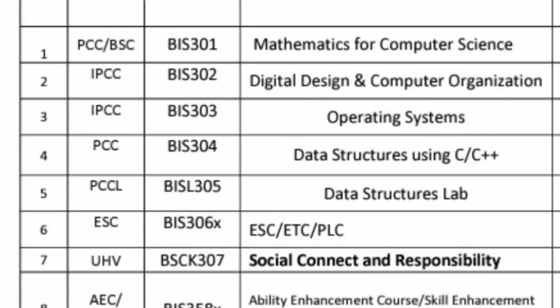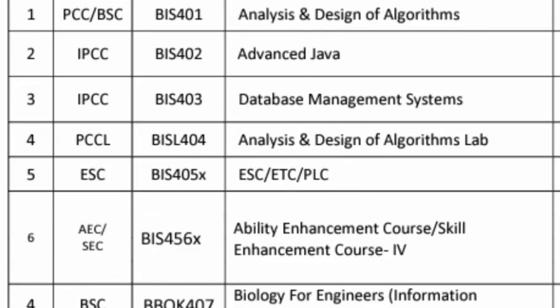Between NSS, physical education, and yoga, you have to select one. So there are about nine subjects in total for the third semester. In the fourth semester, you will study analysis and design of algorithms, advanced Java, DBMS, and analysis and design. There are again options between ESC, ETC, and PLC, ability enhancement courses, a course called biology for engineers, universal human values, and again you must select one from NSS, physical education, and yoga.